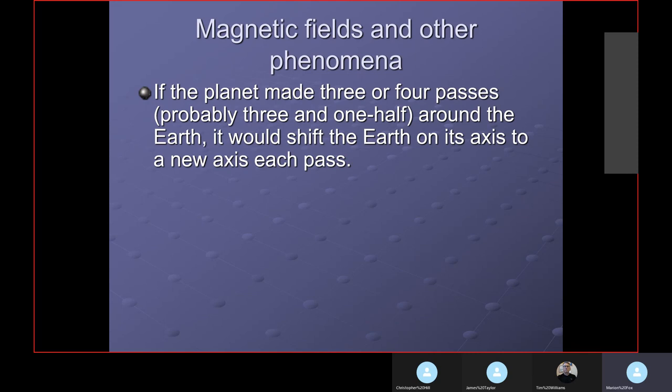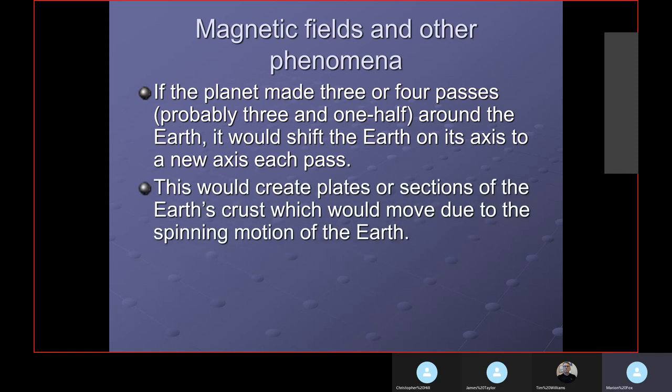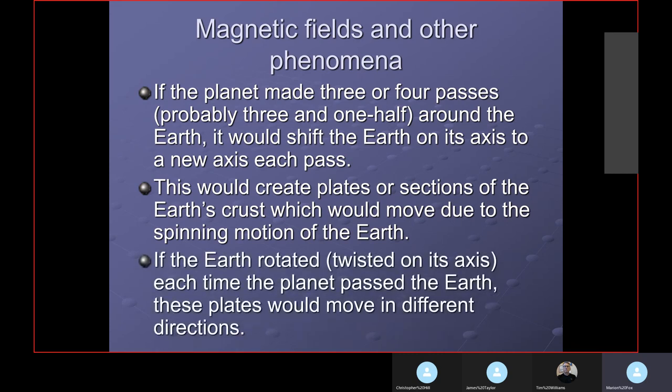You can see this with an ice skater that's rotating. As they move their arms out, they'll slow down. If they move their arms in, they'll speed up. That's conservation of angular momentum. The spinning motion, as the two planets interacted, they would exchange angular momentum. It would speed up Mercury and slow down the Earth, depending on which way they're rotating.